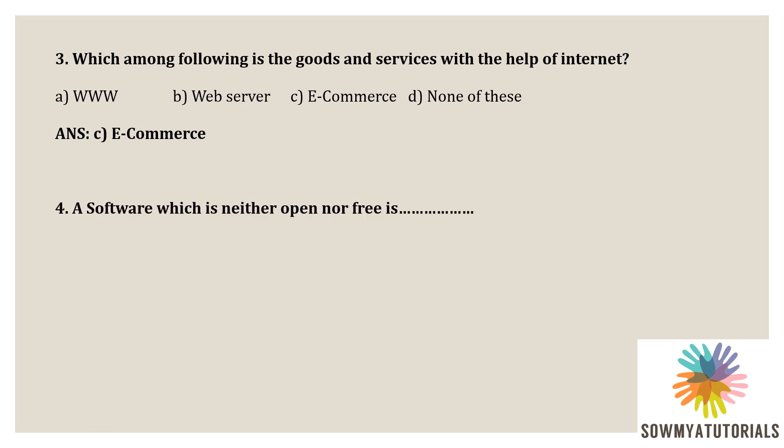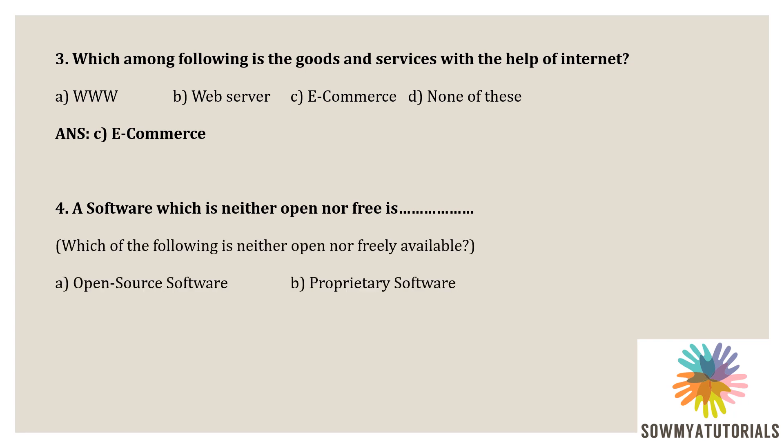The next question is: software which is neither open source nor free is called what? Options: A) Open Source, B) Proprietary Software, C) Free Software, D) Shareware. The correct option is B) Proprietary Software. Proprietary software is software that is neither open nor freely available.